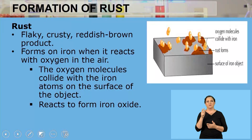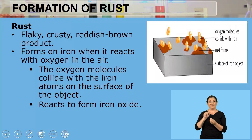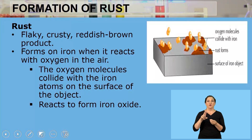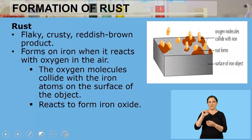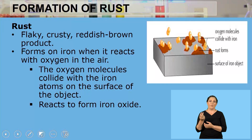We define rust as a slow chemical reaction of iron metal reacting with oxygen and moisture to form a complex compound. Part of that complex compound is iron oxide. Therefore, rust is a form of corrosion. Corrosion is the eating away and eventual destruction of metals by chemical reactions. The rusting of iron is the most common form of corrosion.